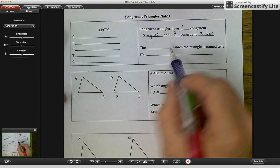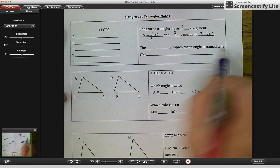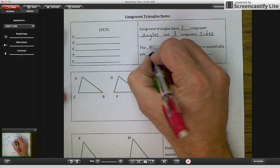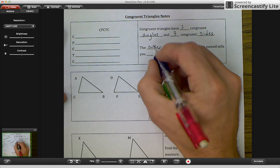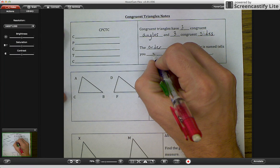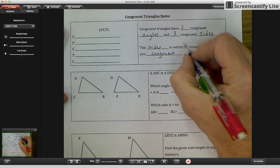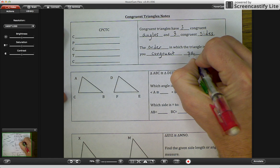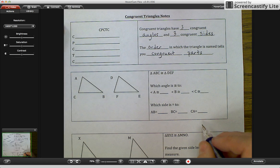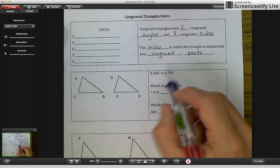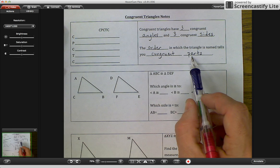And then the next sentence says the blank in which the triangle is named tells you blank blank. The order in which the triangle is named tells you congruent parts. So we're going to get down here and I'll talk more about the order in which triangle is named tells you the congruent parts in a moment.